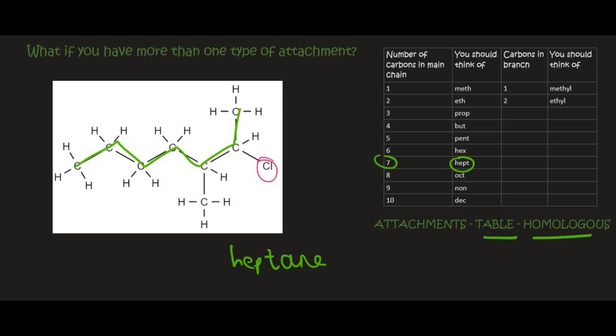Now we need to look at all the attachments, so that is everything sticking out from the main chain. That's this one and this one. We've got a one carbon attachment which is called methyl, but we also have a chloro. The first thing we need to look at is we want to make sure that the branch numbers are as low as possible. If we labeled it from the left, your branches would be on carbon five and six. If we label it from the right, your branches will be on carbon two and three. So obviously we're going to label it from the right.